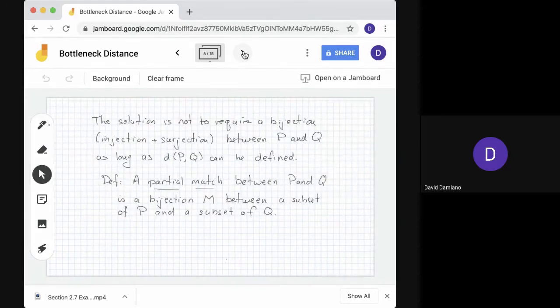Okay. What do we do? We create what's called a partial match. So we have P and Q. We don't really need to have the injection surjection. What we need is to be able to define the distance, and this will turn out to be sufficient. So a partial match between P and Q is a bijection between a subset of P and a subset of Q.